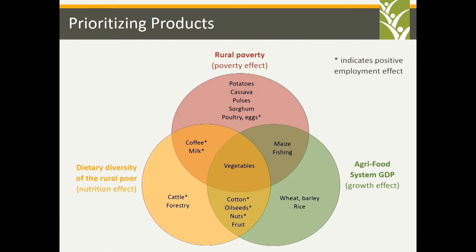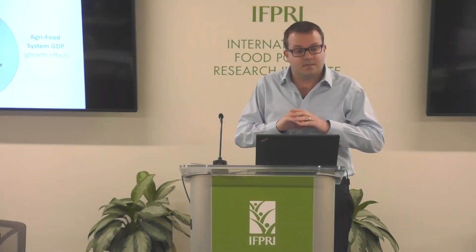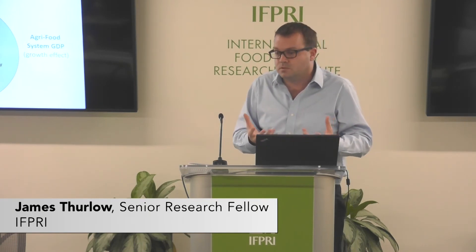Today, now that we've added the dietary diversity of the rural poor lens, you can start to see the products that we'd overlooked start to come to the top. We're talking about milk, cattle, fruit, and obviously vegetables sitting right there in the middle. This kind of analysis is incredibly simplified, and of course it's not at the level of detail that a lot of nutritionists want to see, but this is proving to be highly influential in the way we interact with presidents' offices picking priority commodities or agricultural investment plans deciding where to put resources.